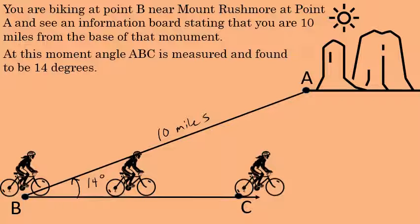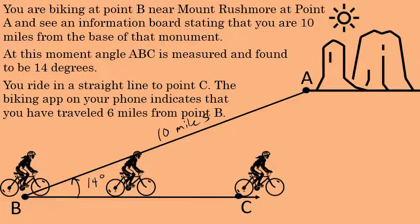Continue biking towards point C in a straight line. The biking app on your phone indicates that you've traveled six miles from point B to point C.